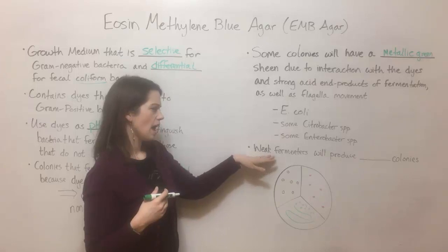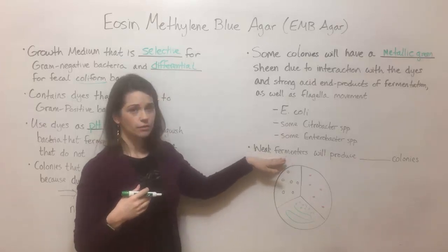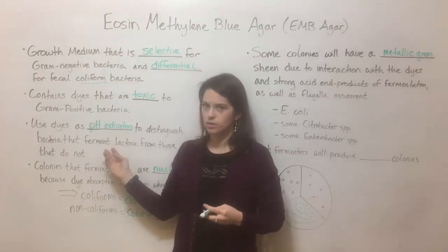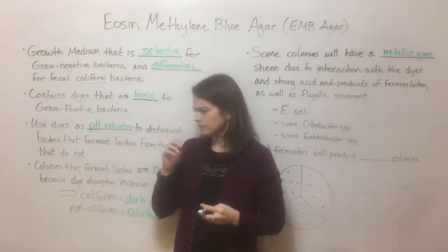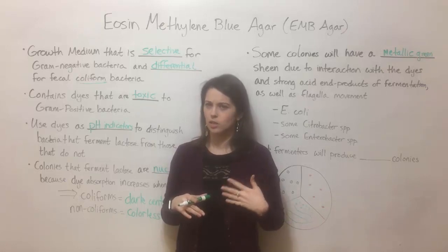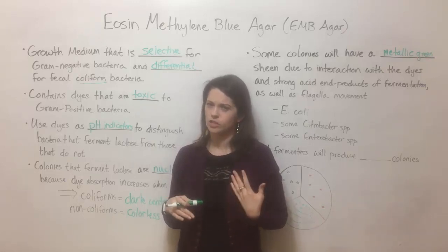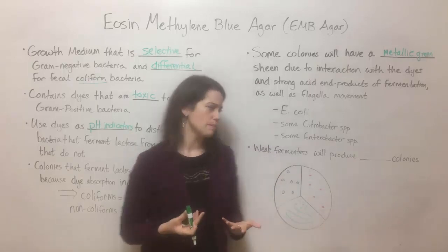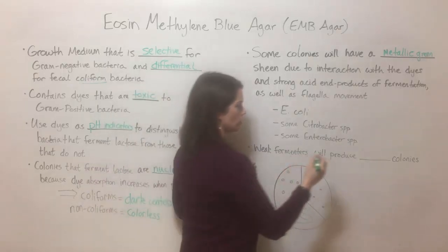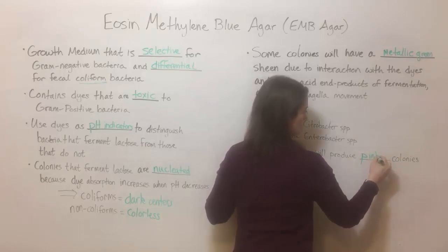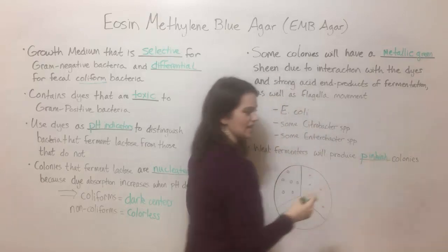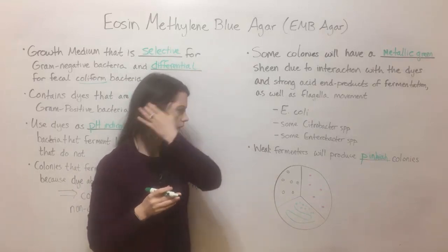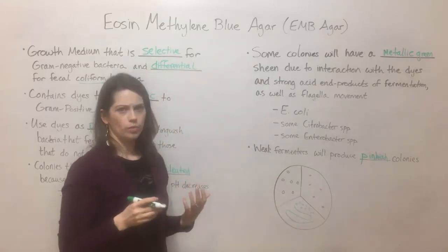Something else to keep in mind is that if you have bacteria that are weak fermenters — meaning they can ferment the lactose but it's slow and not in large amounts — the pH isn't going to change as much because while acid will be produced, it won't be very much. That is going to produce pinkish colonies, maybe a faint pink color that's noticeable but not very strong.